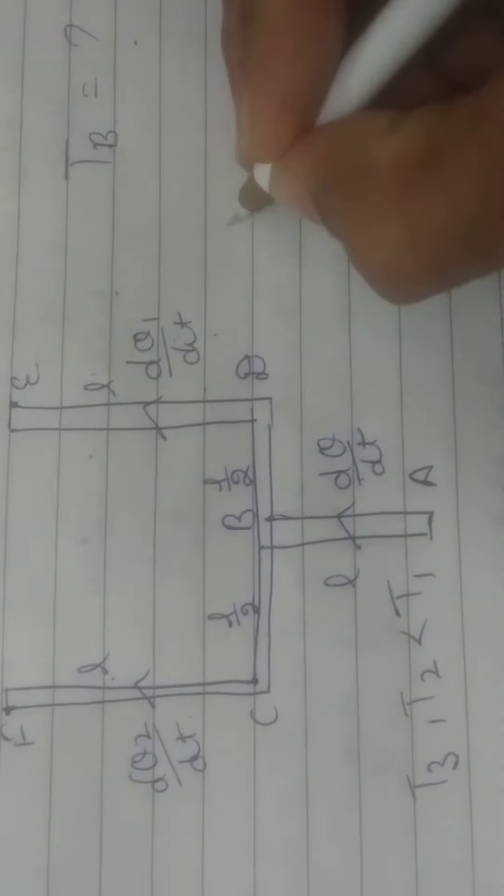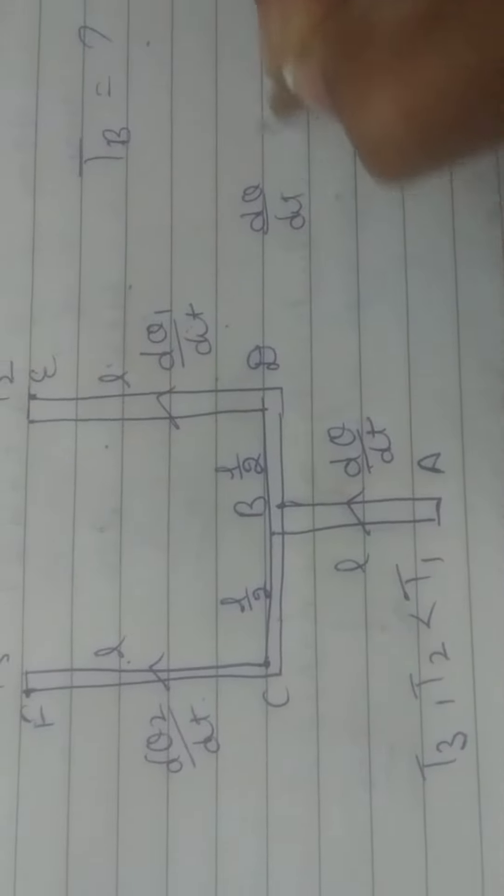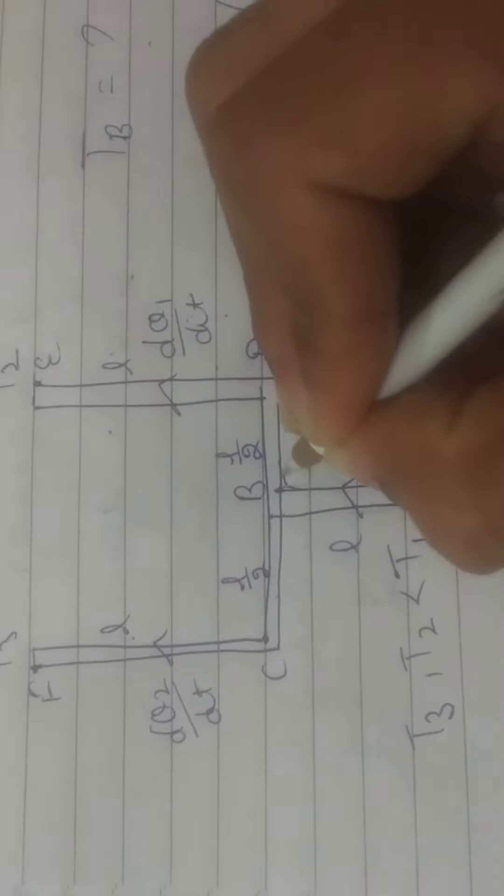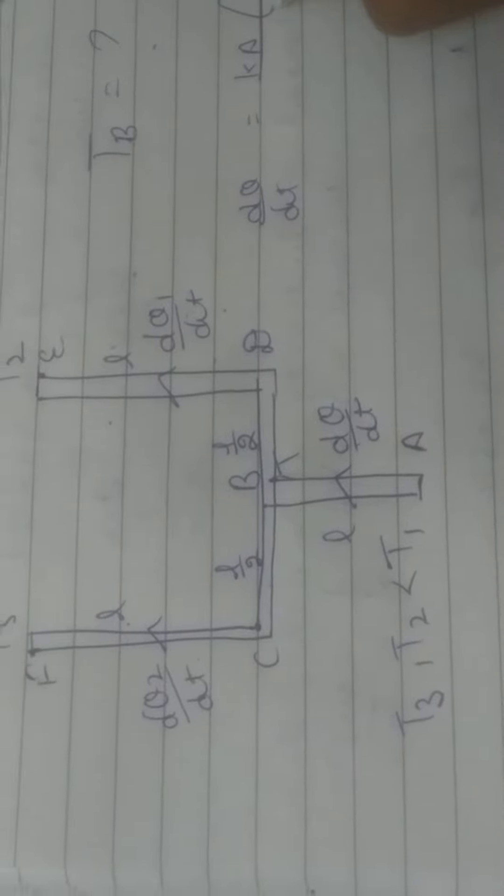So we have DQ by DT equals K times A times (T1 minus T), here is T, divided by L.